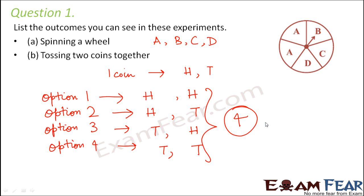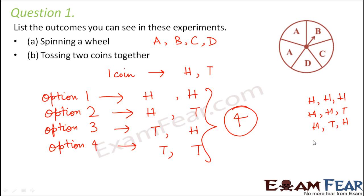In case you had been tossing three coins together, the possible options could have been head-head-head, head-head-tail, head-tail-head, and so on. Try this out as an exercise and see what are the total number of possible outcomes when you toss three coins together.